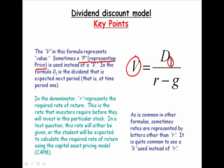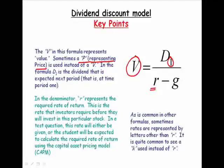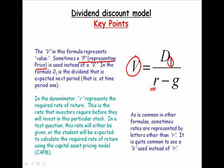In the denominator, we've got R. R is the required rate of return. It's what investors require based upon the perceived riskiness. It's the rate of return that investors require before they will invest in that stock. Generally, it's given, or one might have to use the capital asset pricing model to determine the required rate.